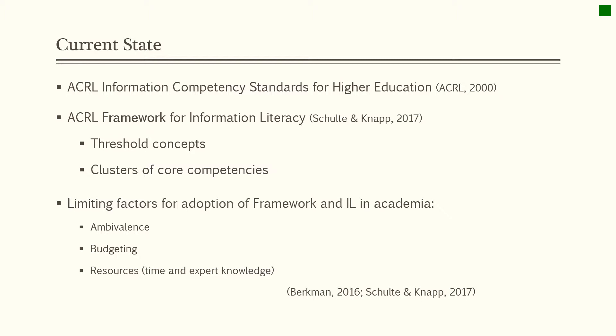In 2000, the ACRL formulated the Information Literacy Competency Standards for Higher Education, which served as a guideline with specific indicators to identify students as information literate. In 2016, the standards were superseded by the ACRL Framework for Information Literacy. The framework shifted significantly away from the previous standards-based approach and adopted a more philosophical theory of threshold concepts, introducing clusters of interconnected core competencies in place of task-based learning objectives. It advocated for librarian autonomy in developing assessment methods instead of using the prescriptive list of 22 measurable performance indicators.